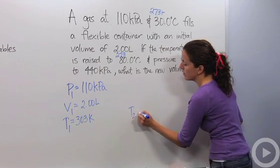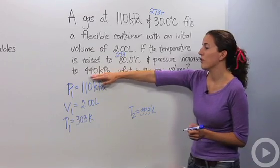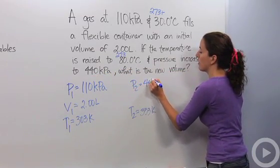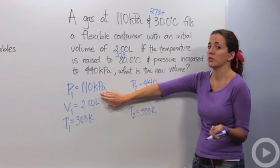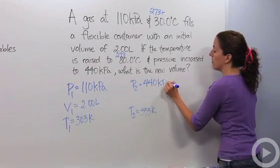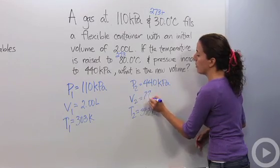So our T2 is 353 Kelvin. And the pressure increased to 440 kilopascals, the pressure P2 is equal to 440 kilopascals, which I'm very happy that I kept it in kilopascals to make sure these units are the same, because pressure can be measured in several different units. And what is the new volume? So our V2 is our variable, what we're trying to find.